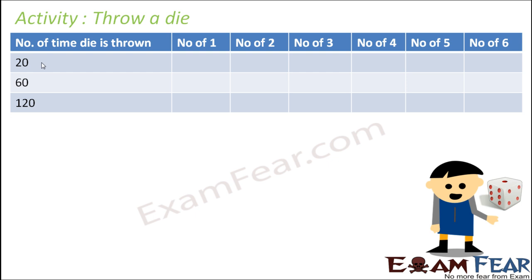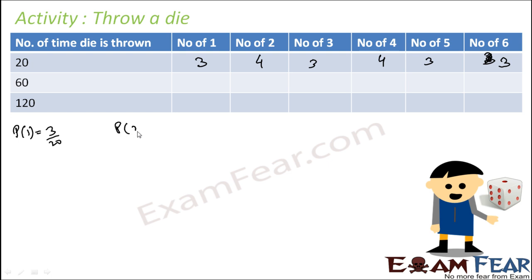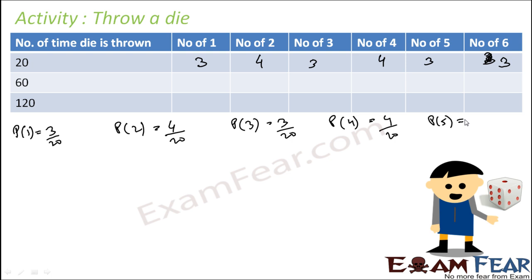I have thrown the die 20 times and got the following data. You can also perform this experiment at home — just pause this video, get a die, and do it yourself. In this case, probability of getting 1 is the number of times 1 came, that is 3, by the total number of observations, 20. Similarly, probability of getting 2, 3, 4, 5, and 6 are each calculated as number of times that face came by total observations. If you see, these values are not all the same — they are different.